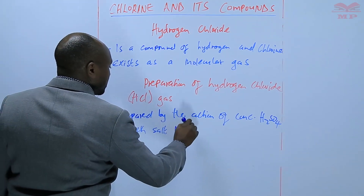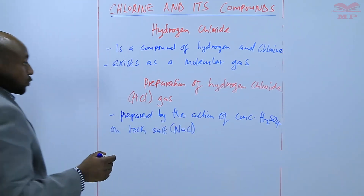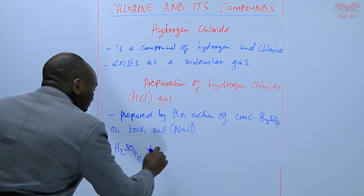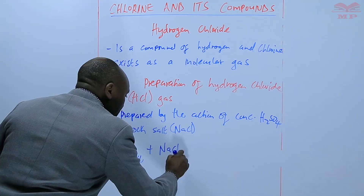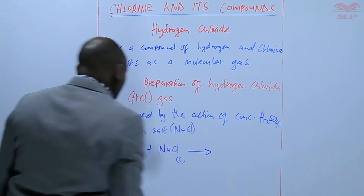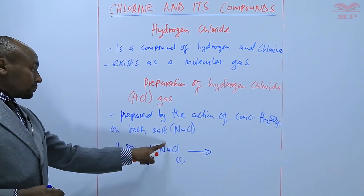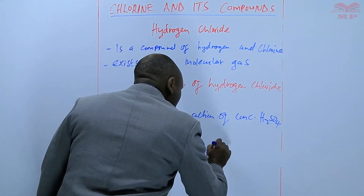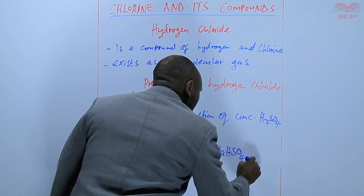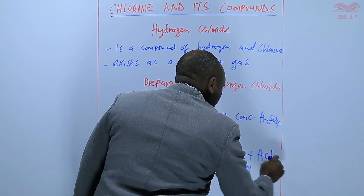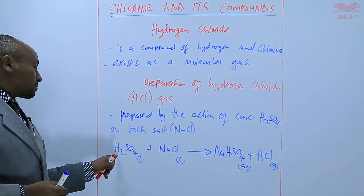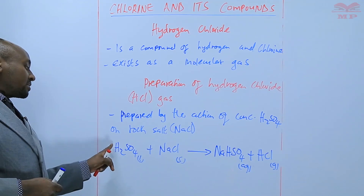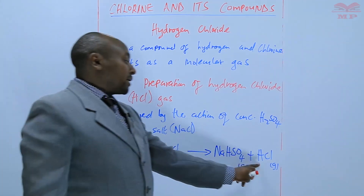Rock salt is sodium chloride. The reaction that takes place: H₂SO₄ (liquid) combines with sodium chloride. Sodium is monoatomic, so it only displaces one of the hydrogen atoms, giving sodium hydrogen sulfate plus HCl gas. Sodium displaces one hydrogen from the sulfuric acid, which is a dibasic acid, and that hydrogen combines with chlorine to form hydrogen chloride.